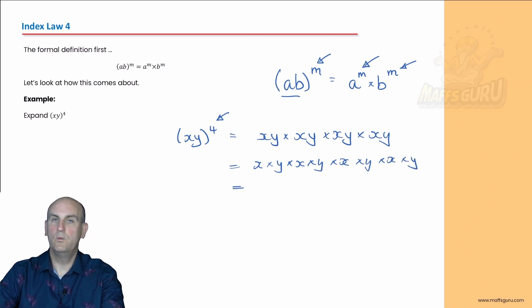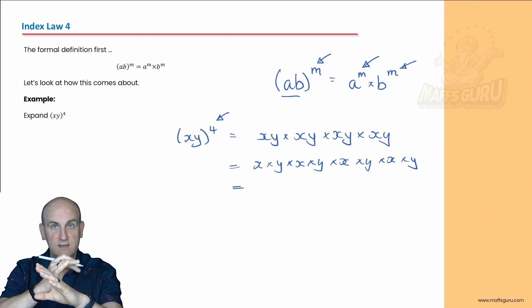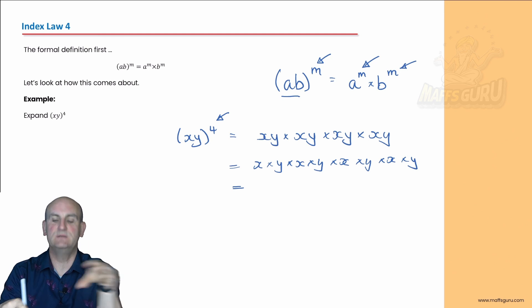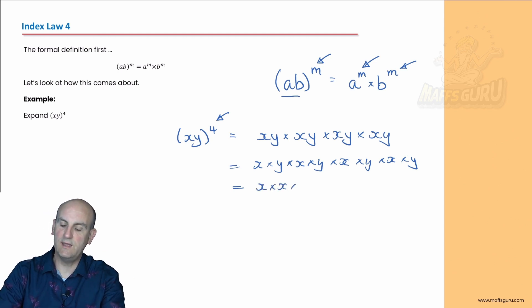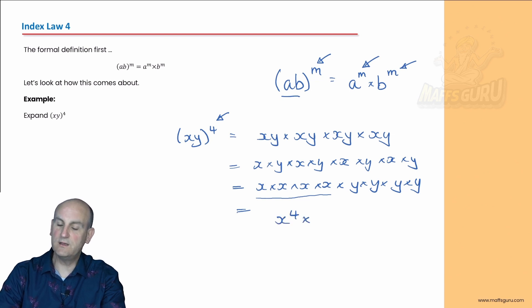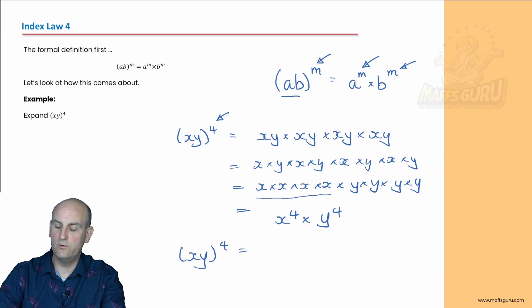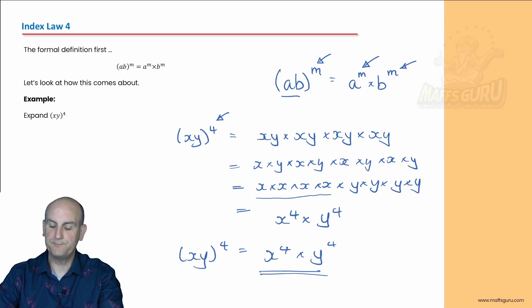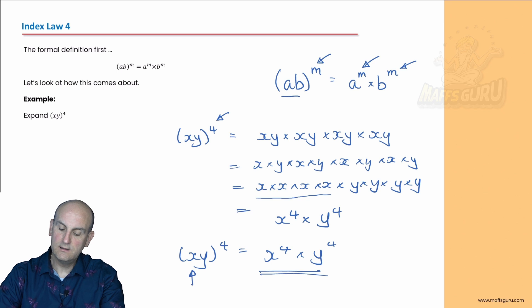Now, they're all times together, so I can rearrange them and put the letters that are the same together: x times x times x times x times y times y times y times y. So x times x times x times x becomes x to the power of 4, and y times y times y times y becomes y to the power of 4. So (xy) to the power of 4 is the same as x to the power of 4 times y to the power of 4. The x was inside and became to the power of 4, and the y was inside and became to the power of 4.